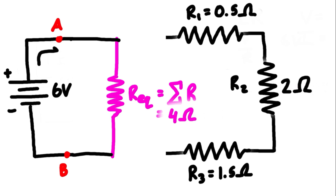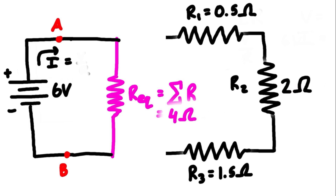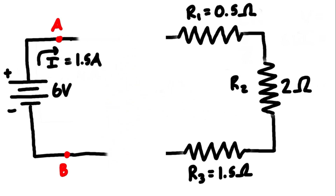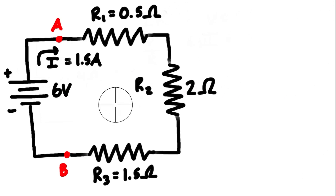We can now solve for the total current in the circuit: I = V/R. With a voltage drop of 6 volts and an equivalent resistance of 4 ohms, we get 6/4 = 1.5 amps. So whether we have a single 4-ohm resistor or the three series resistors, the system will have 1.5 amps flowing through it.